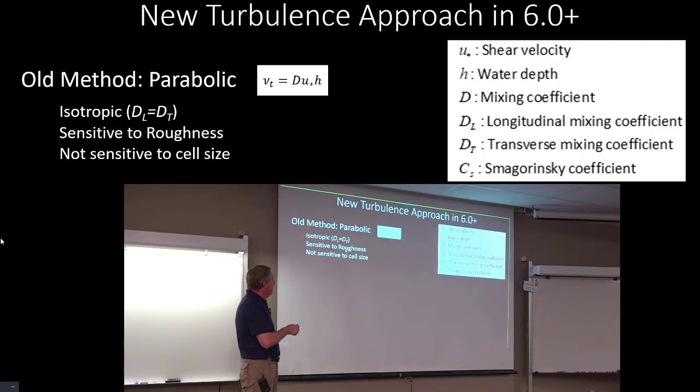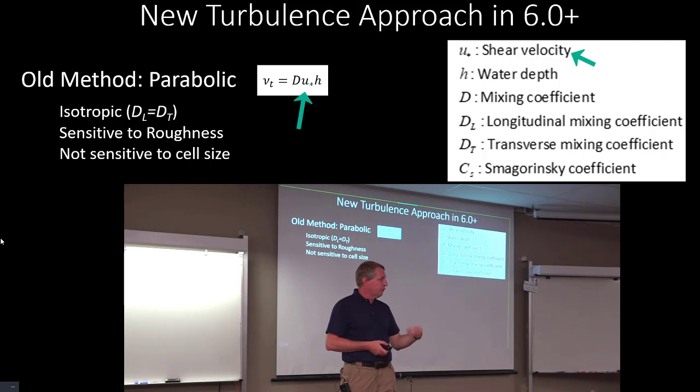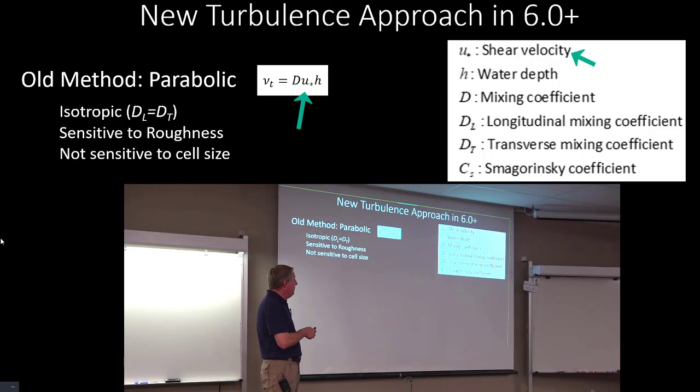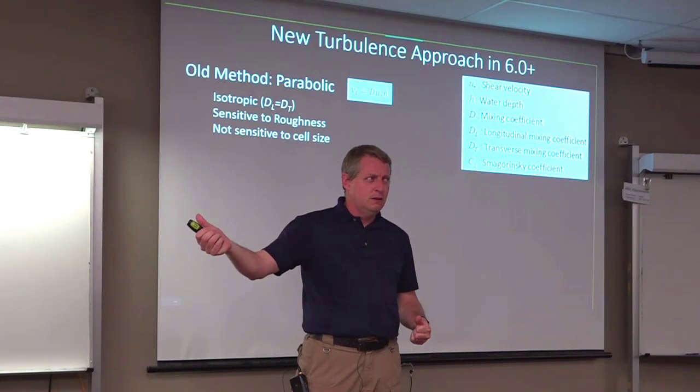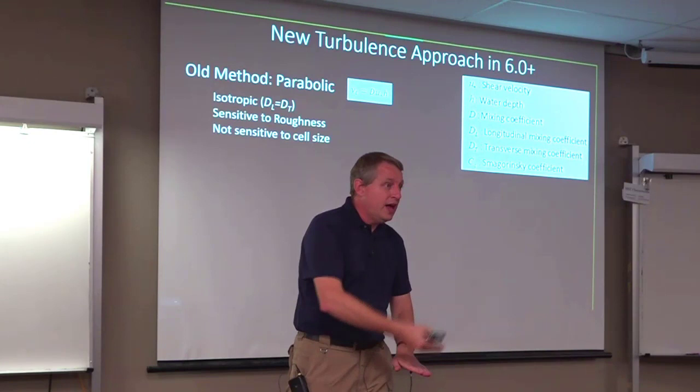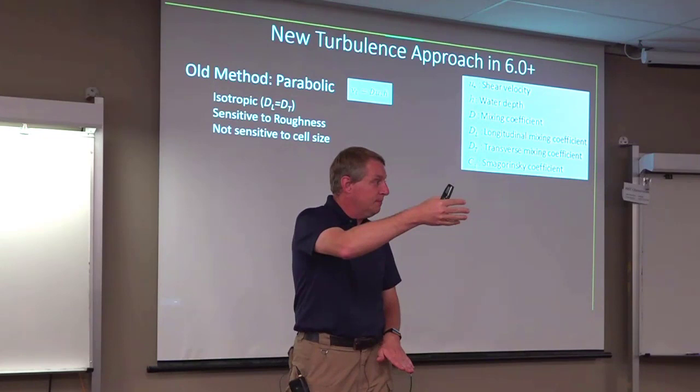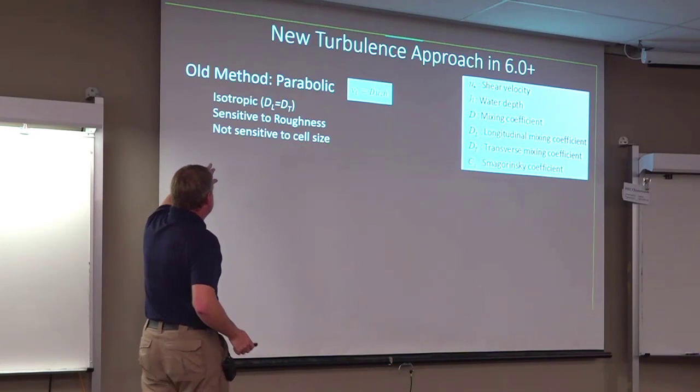It's also sensitive to roughness. Where? Well, this term, the shear velocity. That's a function of your friction slope, which is backed out of Manning's equation. And so your n value, that might as well be n value in there. It's a function of n value. So as your n value changes, your diffusion changes. Does that make sense? Yeah, it does. If your channel is rougher, your vertical velocity distribution is going to be more extreme, and that's going to cause more mixing. So that makes sense. And then it's not sensitive to cell size, which that seems like it makes sense. So this has kind of positives and negatives to it. That's the parabolic method.